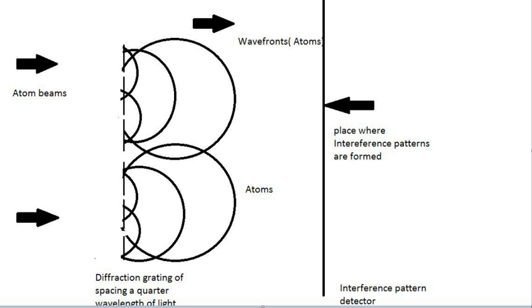Atom interferometers work on the principle of diffraction. The diffraction gratings are nano-fabricated materials with a separation of a quarter wavelength of light. When a beam of atoms pass through a diffraction grating, due the inherent wave nature of atoms, they split and form interference fringes on the screen.